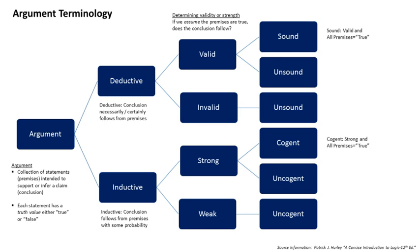The availability heuristic causes the reasoner to depend primarily upon information that is readily available to them. People have a tendency to rely on information that is easily accessible in the world around them. For example, in surveys, when people are asked to estimate the percentage of people who died from various causes, most respondents would choose the causes that have been most prevalent in the media such as terrorism, murders, and airplane accidents rather than causes such as disease and traffic accidents, which have been less accessible to the individual since they are not emphasized as heavily.